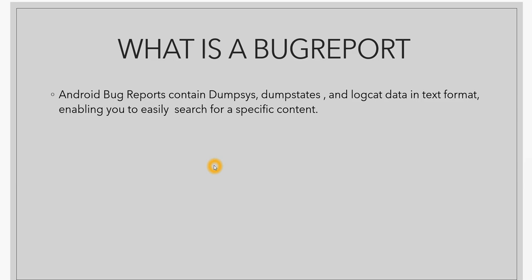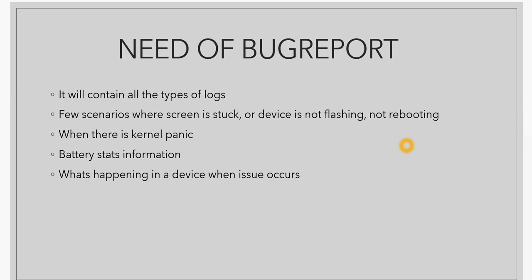To begin with, what is this bug report? We know that bugs are a reality in any type of development, and bug reports are critical in identifying and solving problems. An Android bug report contains dumpsys, dump states, and logcat data in text format, enabling you to easily search for specific content. Analysis of logs is a very important part for a framework developer working on Android. Whenever an issue occurs, we go through the logs to get clues and solve the issue. Bug report contains all the dumpsys, dump state, and logcat information together in a single form, which helps in analyzing issues.